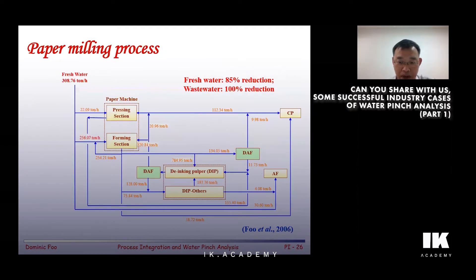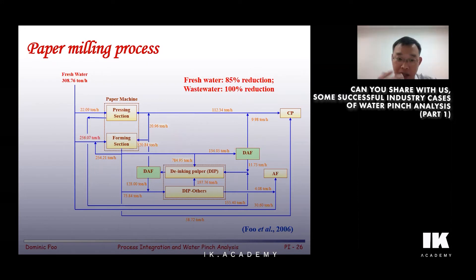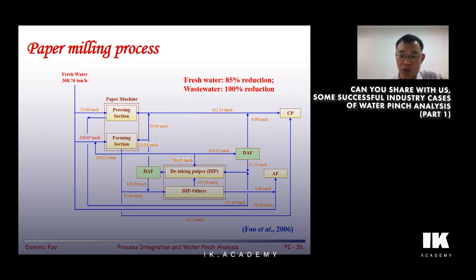So when we did a water pinch analysis, it actually can help to reduce fresh water to 85% and wastewater to 100%. However, this is using what we call the grassroots design method. It means that we have to redesign the whole plant, which is not too practical because it's already a plant that is in practice and running in operation. If you have to redesign the whole thing, the plant has to shut down for a few months, so not too realistic.